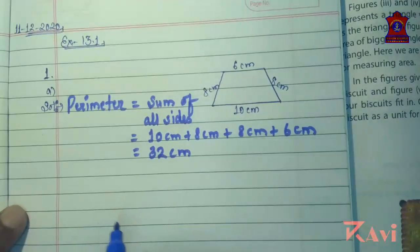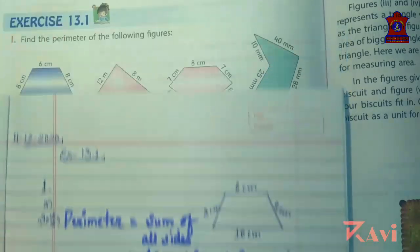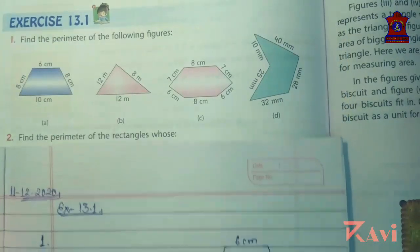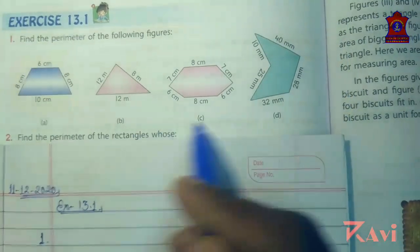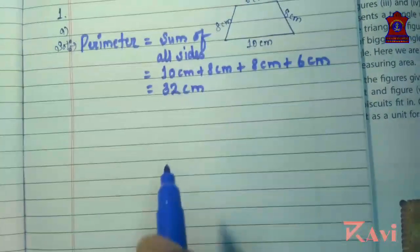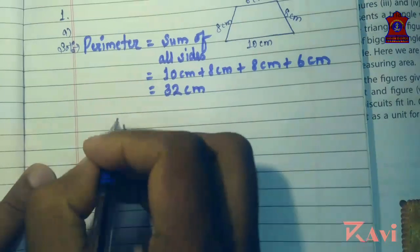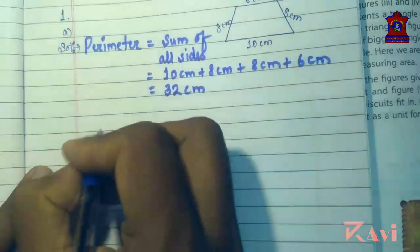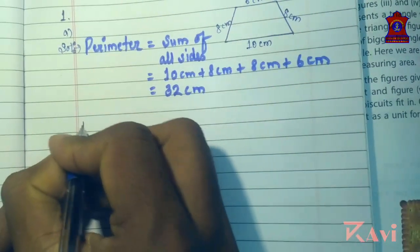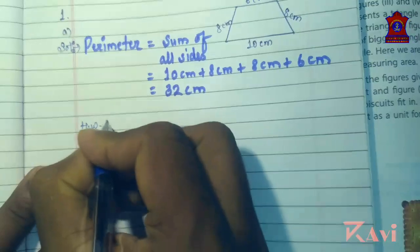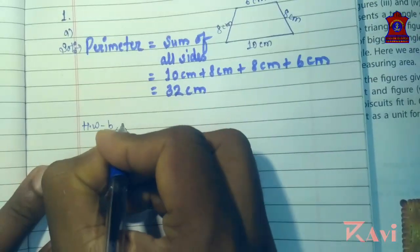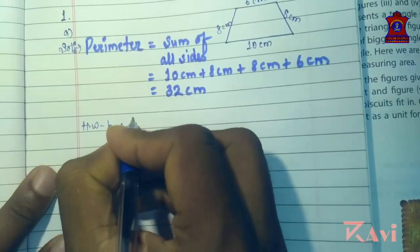Like this you can do question B, C, and D by yourself. It's a very simple question — you can easily do these questions by yourself. So you can try questions B, C, and D on your own.